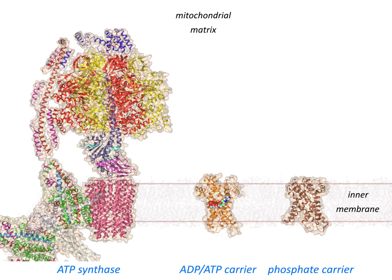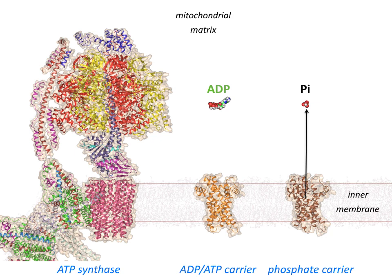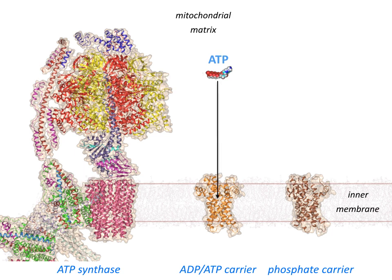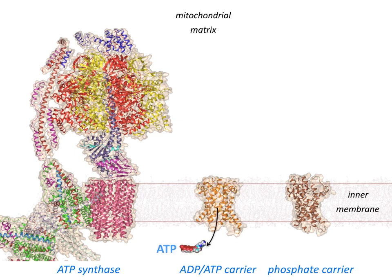The process of ATP synthesis starts when the spent fuel ADP, coming from the rest of the cell, binds to the ADP-ATP carrier, which then changes conformation and transports ADP into the mitochondrial matrix. Similarly, phosphate binds to the phosphate carrier, which changes conformation and transports phosphate into the matrix. These two molecules then diffuse to the catalytic site of ATP synthase, where rotation of the central stalk fuses them together to form ATP, which is then expelled and transported out of the mitochondria to the cytosol for energy-requiring processes.